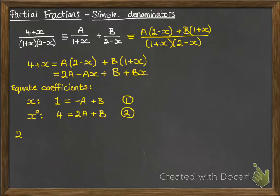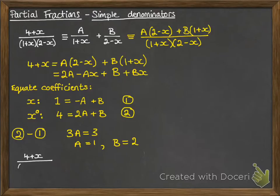Then by simultaneous equations we can work out what A and B are. Then we rewrite our original equation putting in place the A and the B that we've just worked out.